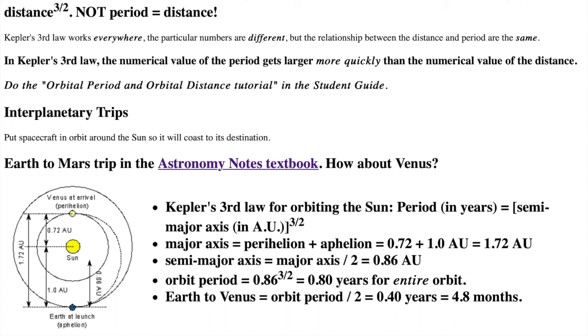Period equals 0.86 to the 3 halves power equals 0.79753 equals 0.8 years, rounded off. That's for the entire orbit, from Earth to Venus and back to Earth. We just want half the orbit, Earth to Venus. So divide 0.80 by 2 to get 0.40 years. There are 12 months in a year, so 0.4 times 12 equals 4.8 months.